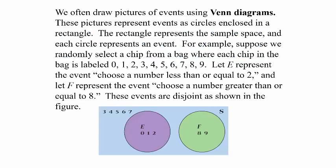We often draw pictures using what we call Venn diagrams. These pictures represent events as circles — one circle represents one event, another circle represents another event — enclosed in a rectangle. The rectangle represents the sample space, which is the list of all possible outcomes, and each circle represents a specific event within the sample space.